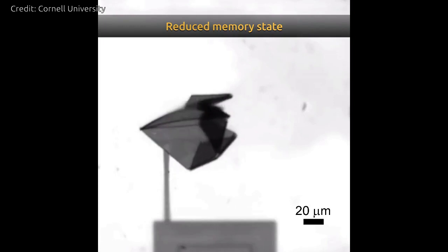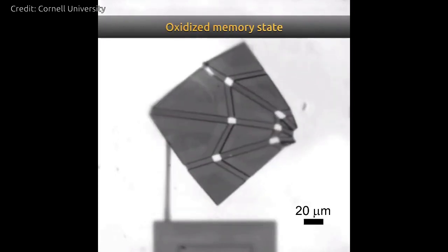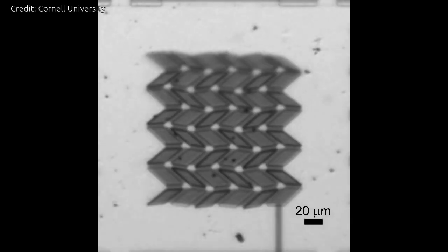The team has already been recognized by Guinness World Records for creating the smallest walking robot. Now, they hope to capture another record with a new self-folding origami bird that is only 60 microns wide.